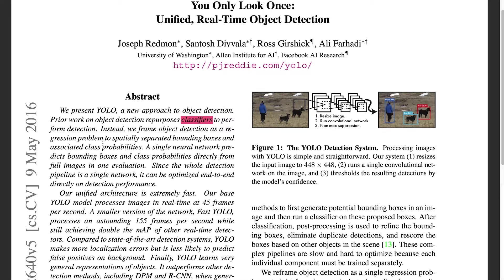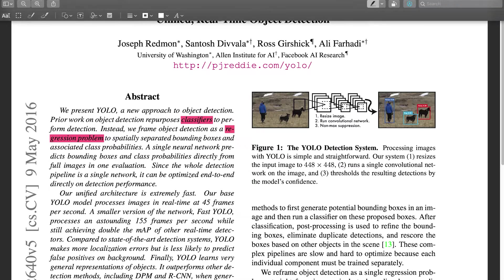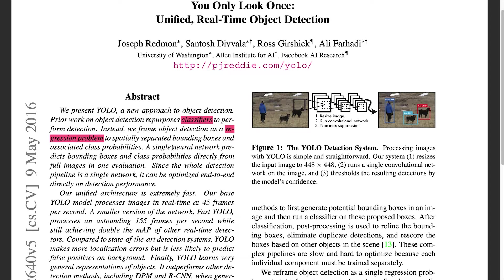Instead, we frame object detection as a regression problem. I don't quite understand what a regression problem is, so I'm going to highlight that as well. It's basically separated bounding boxes and associated class probabilities. A single neural network, now I have a vague understanding of what a neural network is, so I'm going to highlight that in green for the time being.